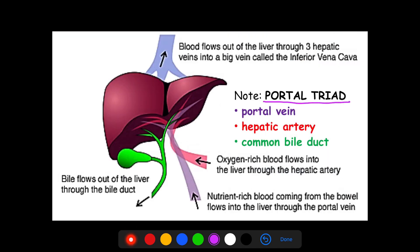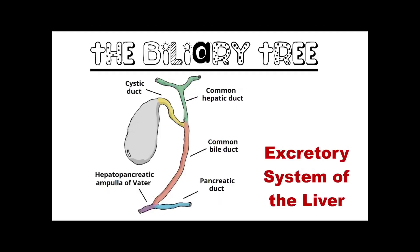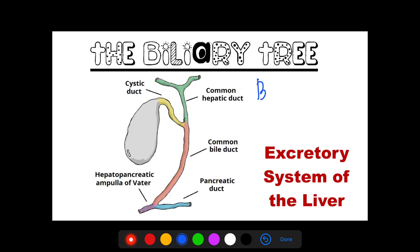The portal triad constitutes mainly of the portal vein, which supplies blood to the liver from the gastrointestinal tract, the hepatic artery, which supplies the liver with blood from the heart, and the common bile duct, through which bile is excreted from your liver. This is the biliary tree, which serves as the excretory system of the liver — it mainly excretes bile. The bile is produced from the liver and is stored in the gallbladder, also known as the bile sac.